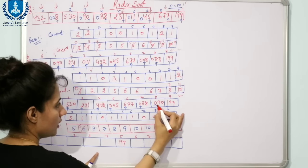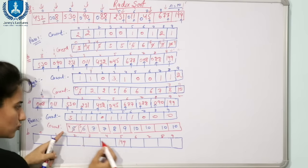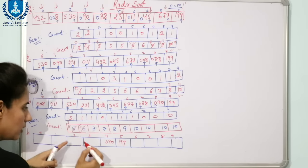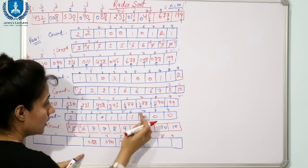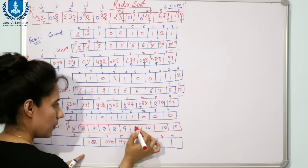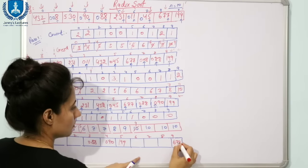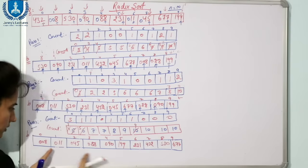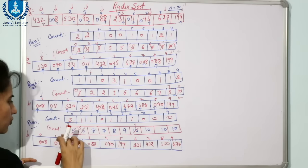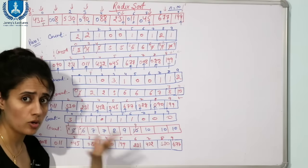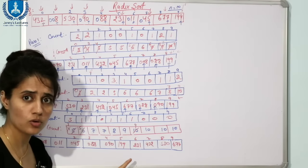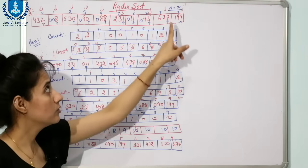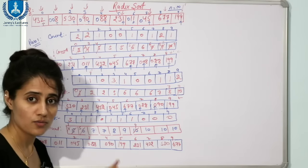Continue building the output array for pass 3: for element with hundreds digit 0 (e.g., 90), go to index 0 with count 5, decrement to 4, place at index 4. For 88 with hundreds digit 0, decrement to 3, place at index 3. For 677 with hundreds digit 6, count is 10, decrement to 9, place at index 9. After pass 3, copy B to A — the array is now fully sorted. Counting Sort was applied three times because the maximum element (677) has three digits.